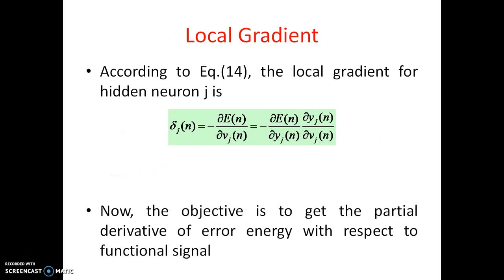This is the local gradient. So according to equation 14 the local gradient for hidden neuron J is delta J of N equal to minus dou E of N by dou Vj of N. So which is exactly equal to dou capital E of N by dou Yj of N into dou Yj of N by dou Vj of N. This will be, as we know dou Yj of N by dou Vj of N is phi dash Vj of N.